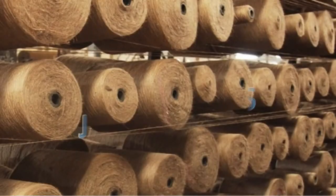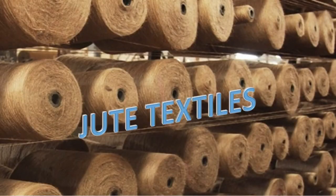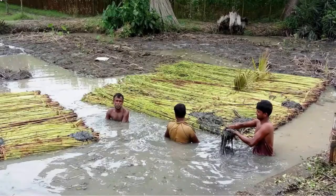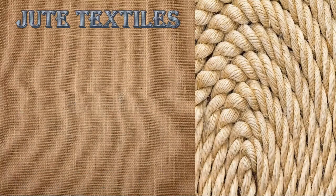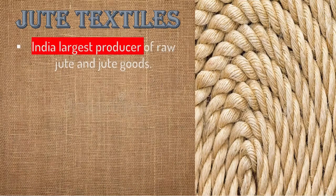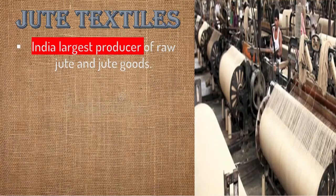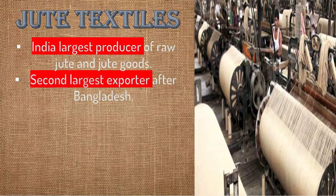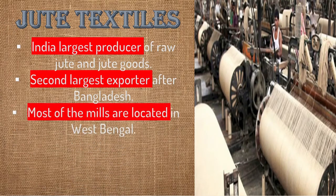In terms of production of raw jute and jute goods, India is the largest producer of raw jute and jute goods. It is also the second largest exporter after Bangladesh — so in terms of export, Bangladesh comes first. Most of the jute mills are located in West Bengal.